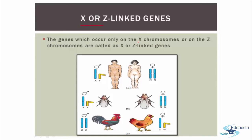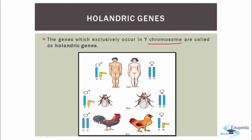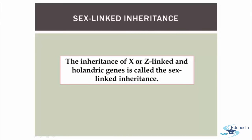X or Z linked genes: the genes which occur only on X chromosome, or on Z chromosome in the case of birds, are called X or Z linked genes. Holandric genes are genes which are exclusively present in the Y chromosome; these are known as holandric genes. Sex-linked inheritance can be defined as the inheritance of X or Z linked and holandric genes.